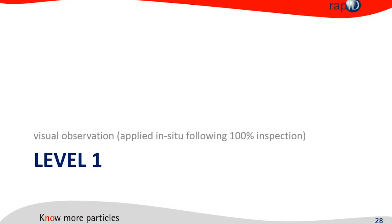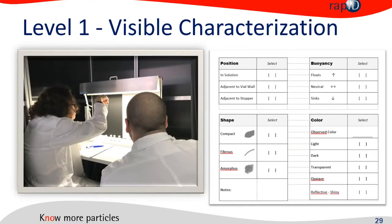Level one is visual observation — it's very important not to confuse this with visual inspection. This comes after the 100% visual inspection that's already done, using similar tools. In training, attendees use a worksheet: they observe if the particle is floating in solution, then swirl it and observe buoyancy — does it go up, is it neutral, does it sink?